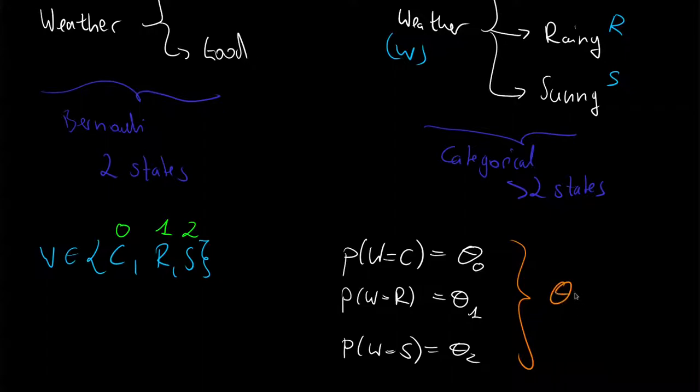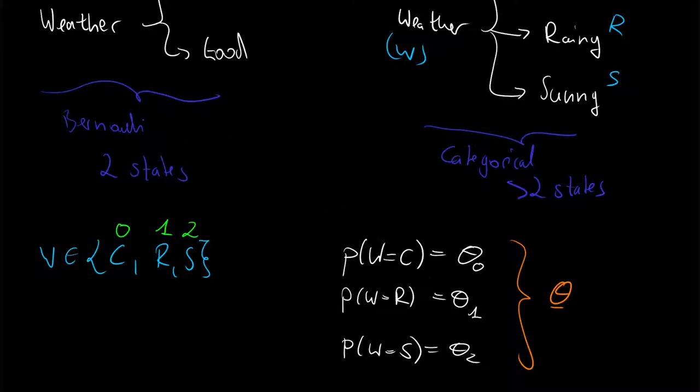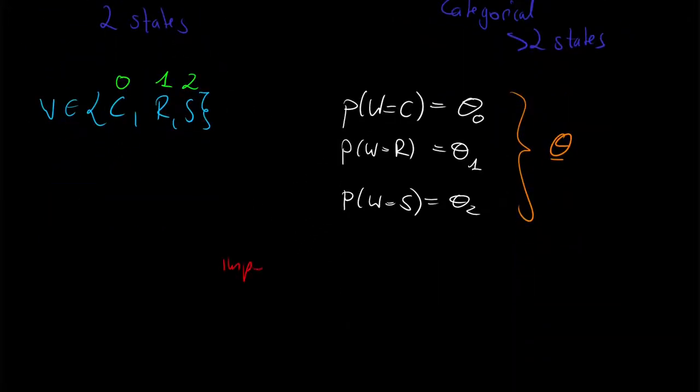Of course, these values have to adhere to a property. And the important property is that they have to add up to one, since we can only take one of the three states, or they cannot be more than 100% likely. So the sum over i zero to the d minus one states that we have over the theta i has to be 1.0.